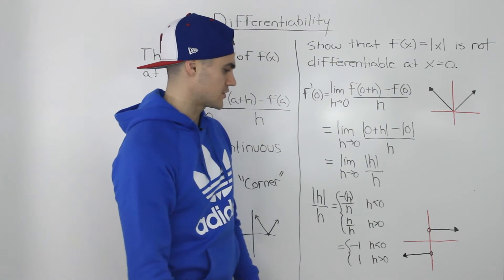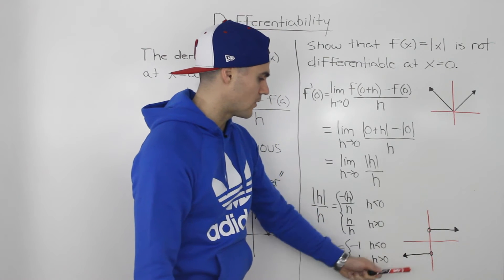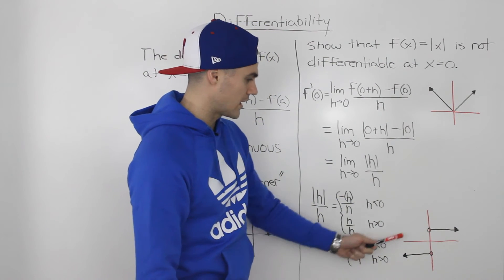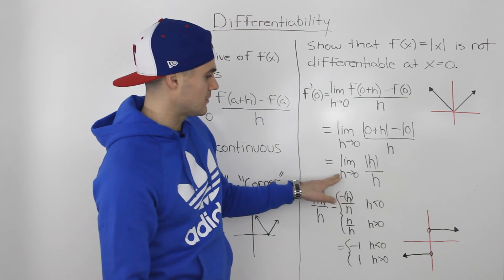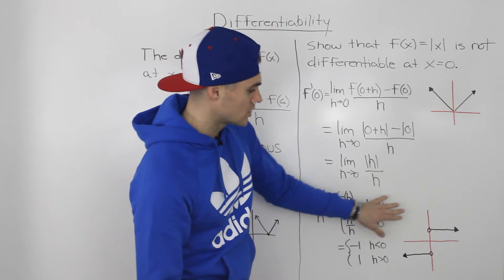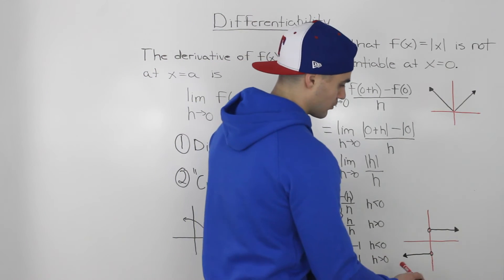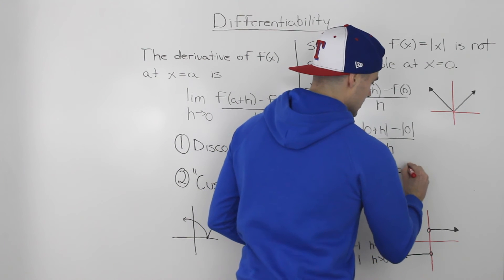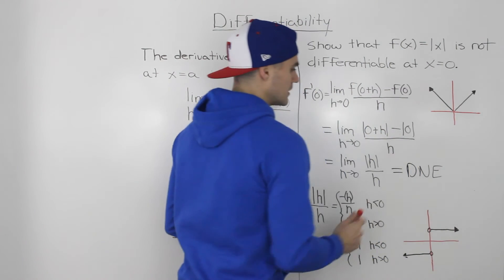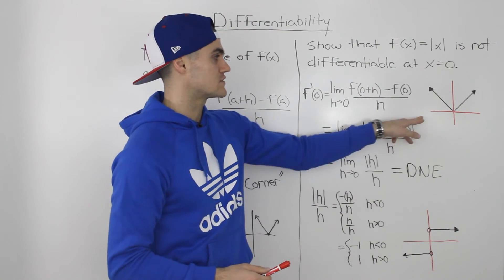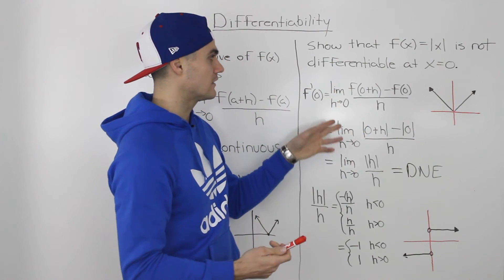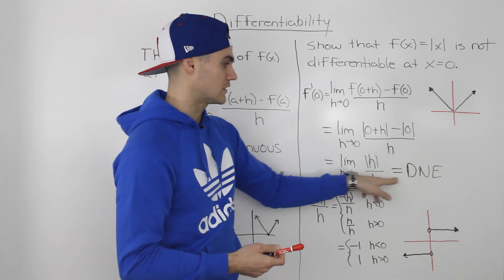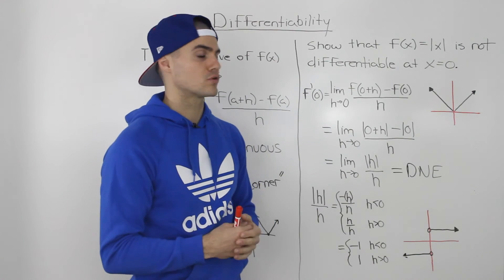When we graph this simplified piecewise function, we get a horizontal line at y = -1 when h is less than 0 (with a hole at 0), and a horizontal line at y = +1 when h is greater than 0 (with a hole there as well). As we approach h = 0 from both sides, we are approaching different y values, so this limit does not exist. Because the limit does not exist, the function is not differentiable at x = 0 — and we proved it.